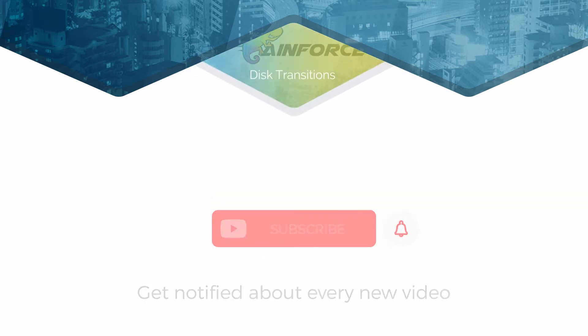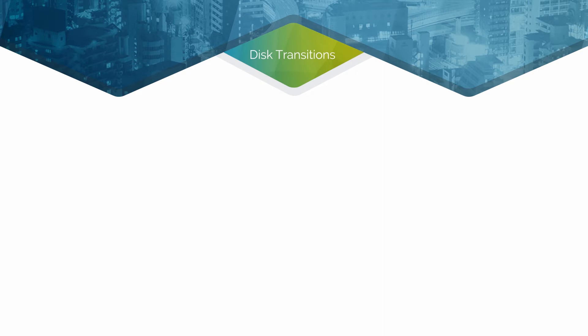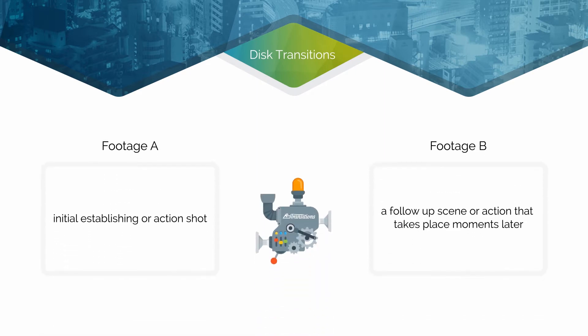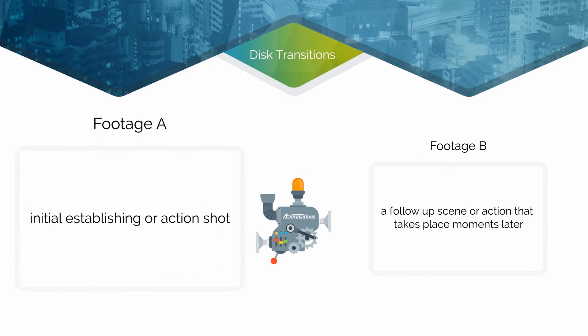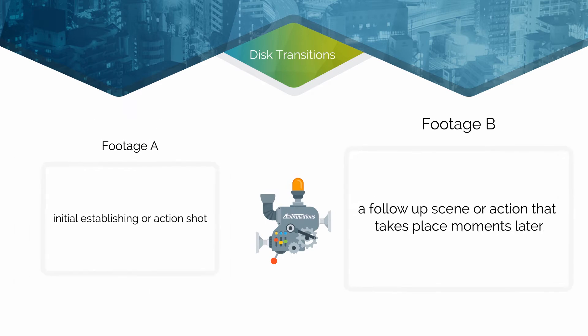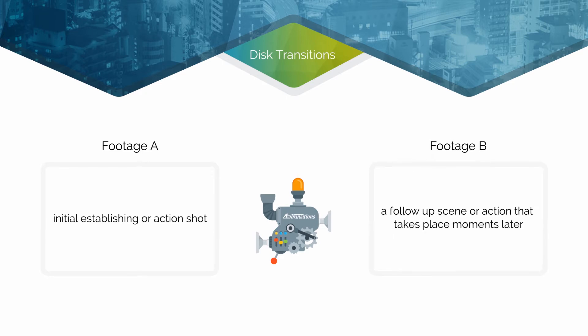The disc transition is one category of transition that can be used to indicate a quick passage of time between two sequential scenes. It lets the viewer know that a short period of time has elapsed between an initial establishing or action shot and a follow-up scene or action that takes place moments later.